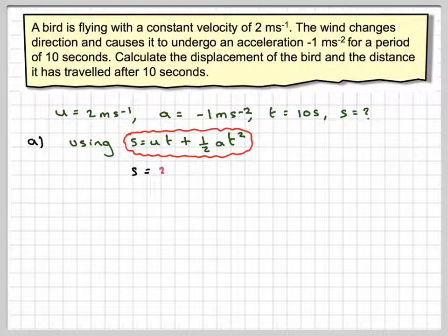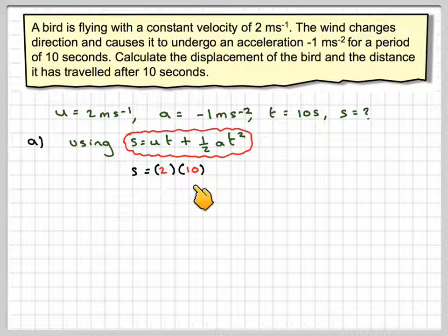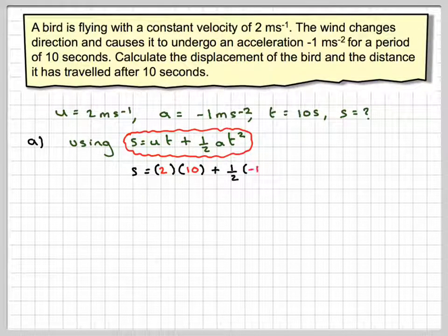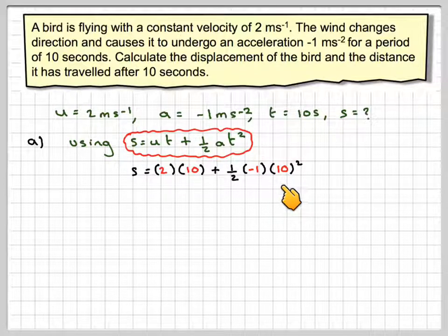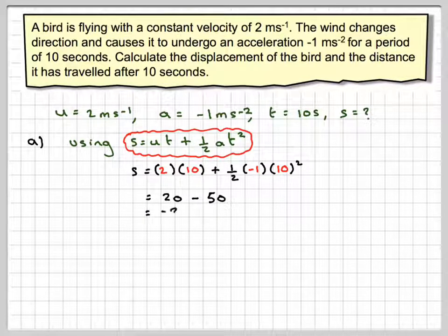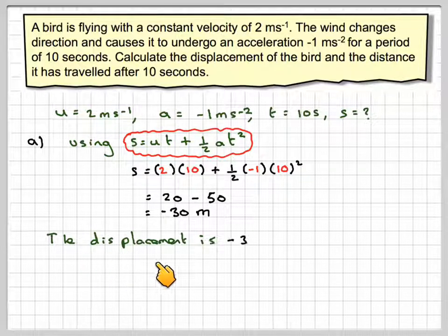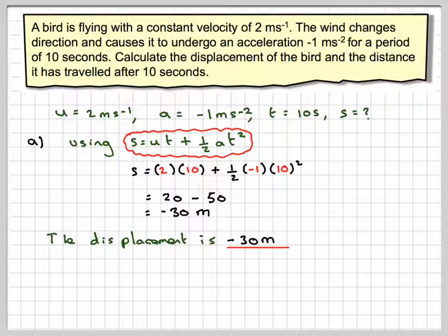we're going to have that S is 2 times 10, plus a half times minus 1 times 10 squared. So it gives me 20 minus 50, which is minus 30 metres. The displacement is minus 30 metres.